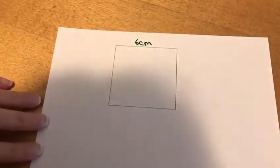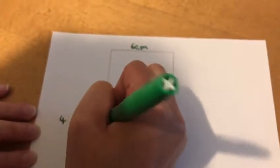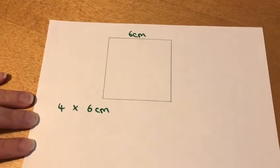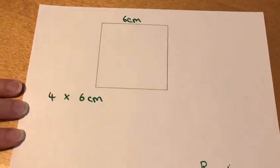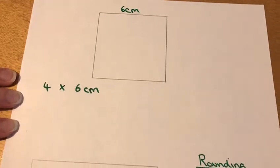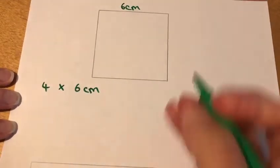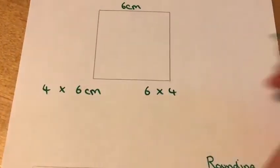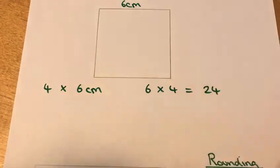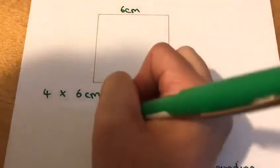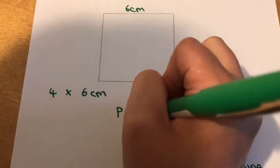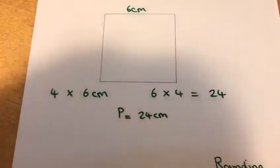So the multiplication we would need to do would be four lots of six centimetres. Now you might look at that calculation and think I'm not very confident with my six times table, but what you can do is you can turn the calculation around so what you would have instead is six times four, and we know our four times table: six times four is 24. So the perimeter of the square would be 24 centimetres.